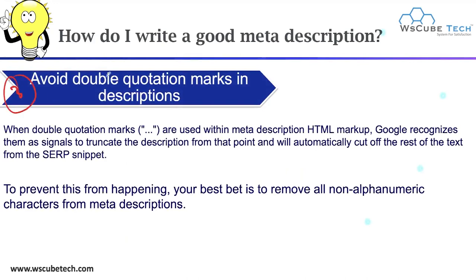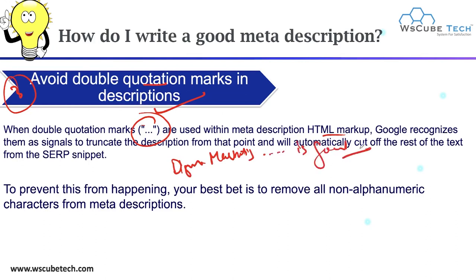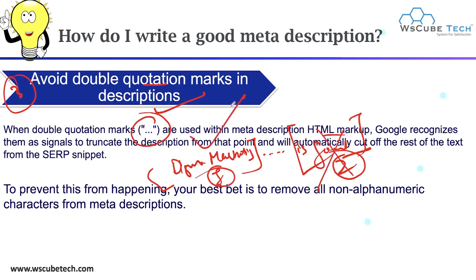Next, avoid quotation marks in your description. When double quotation marks are used within the meta description HTML, Google recognizes them as a signal to truncate the description from that point and automatically cuts off the rest of the content. For example, if you write 'digital marketing... is good,' Google will consider the quoted section as a separate sentence and cut the rest, showing only part of the content on your SERP snippet. To prevent this, your best practice is to remove all non-alphanumeric characters from your meta description.